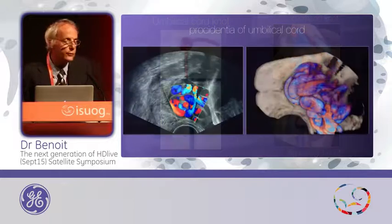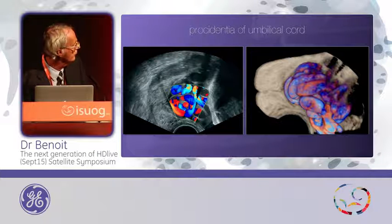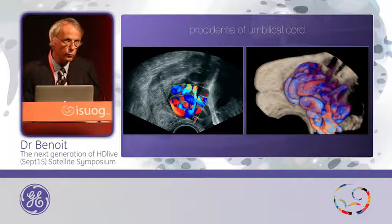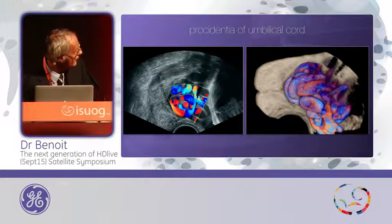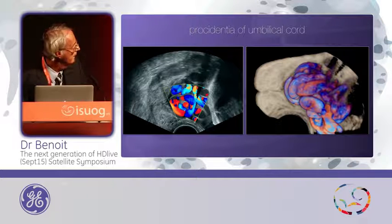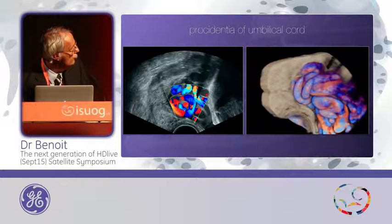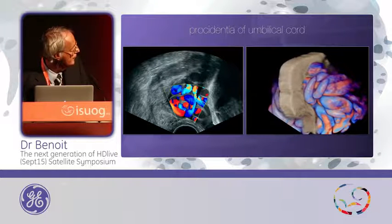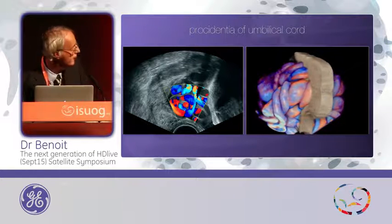This is a cord prolapse. You can see this was obtained with a transvaginal probe — a short cervix with umbilical cord. With a magic cut, I removed only a part of the cervix to obtain only a slice of the cervix, and you will see with this new rendering this cervix and all the loops of the umbilical cord. It's a nice picture, but when I show this kind of picture to obstetricians, they don't like it.